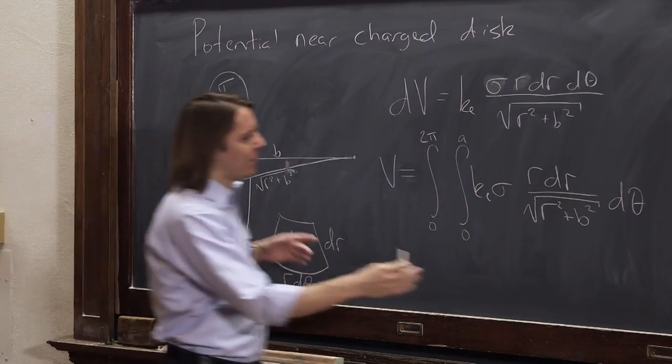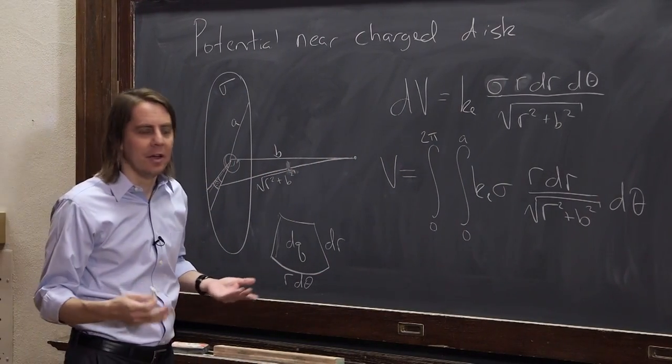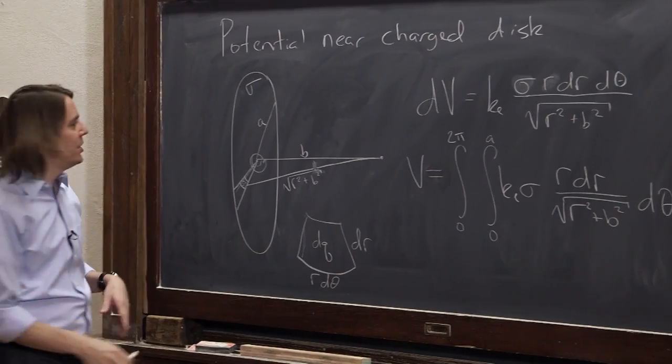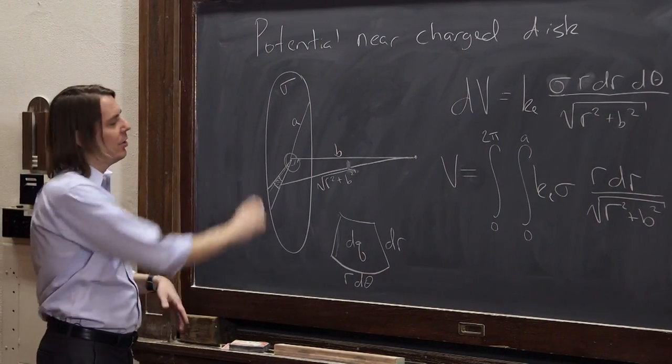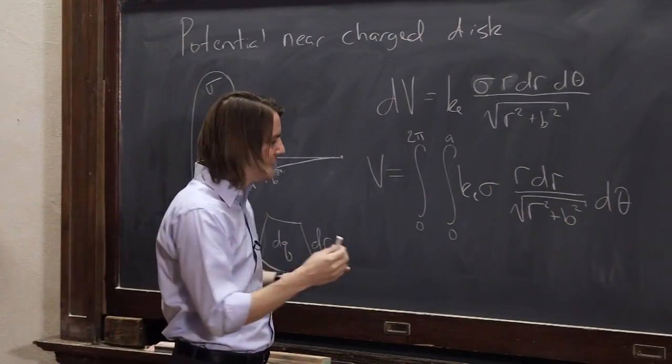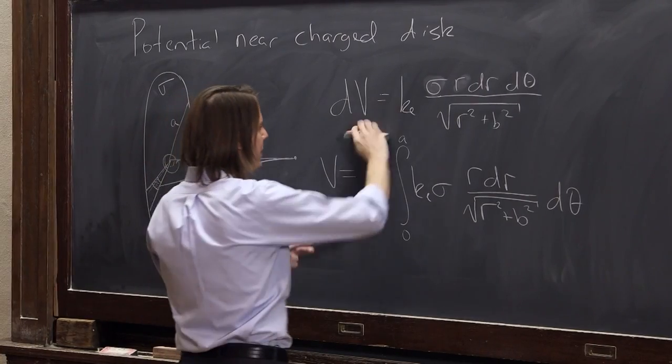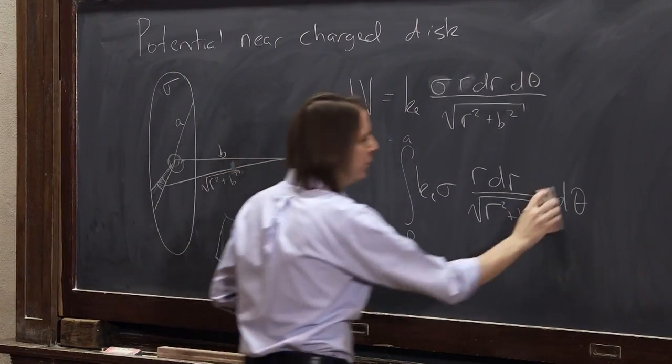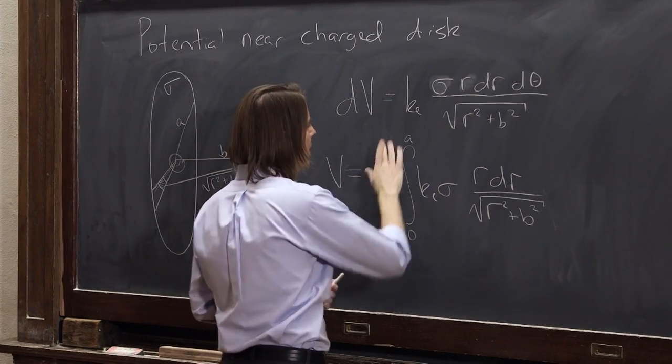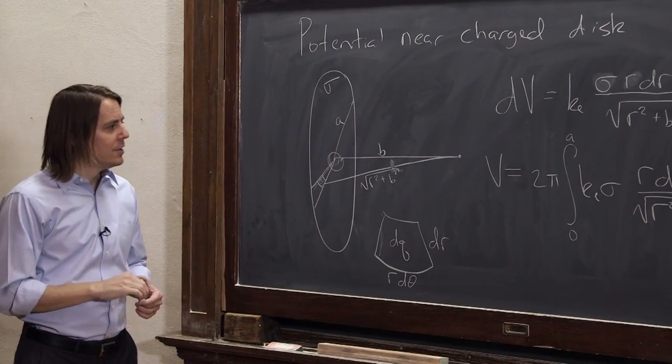So we'll integrate this outside part first. If we integrate d theta, we just get theta. And if we evaluate it from 0 to 2 pi, we just get 2 pi. Depending on what books and notes you're reading, people might just say, oh, there's 2 pi. If nothing changes with theta and you've got to go around, it just adds a 2 pi to the equation. We could just write 2 pi. I showed you the integral because I'm watching your back.